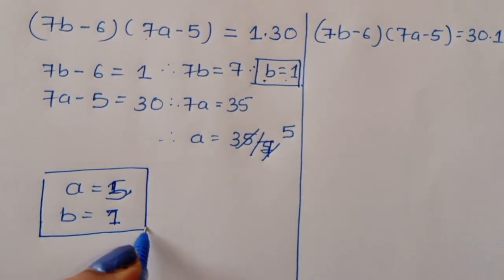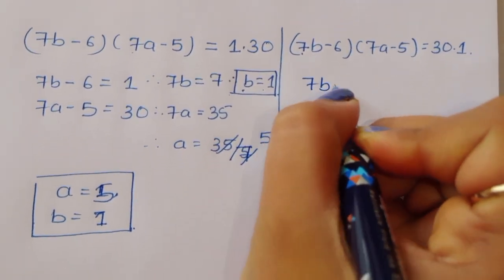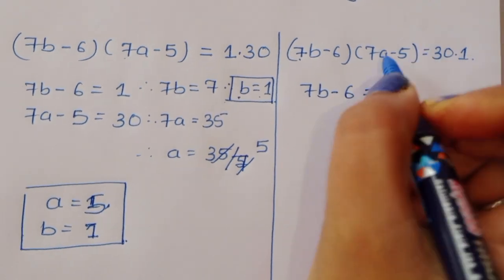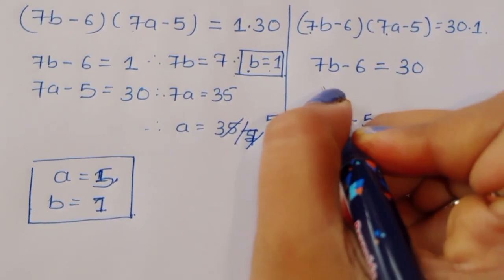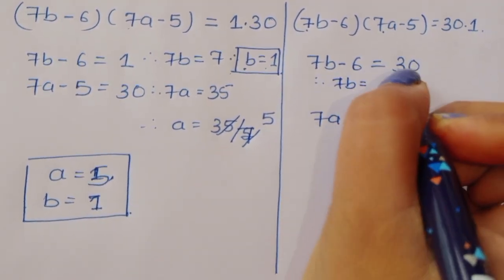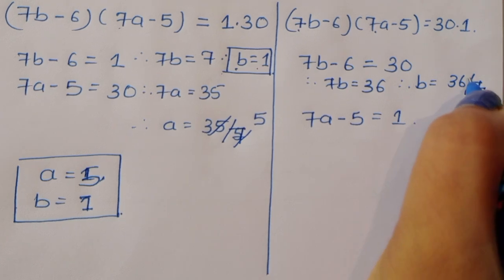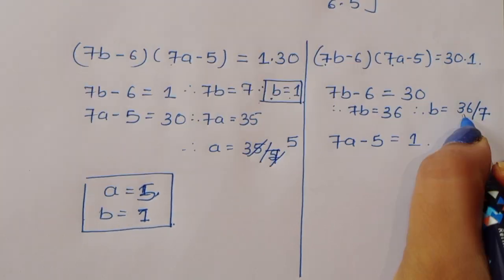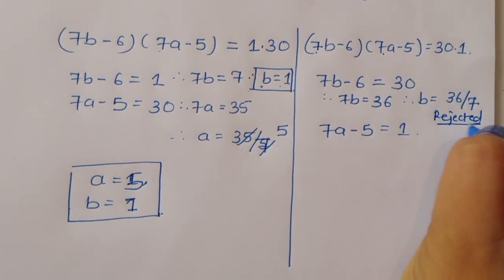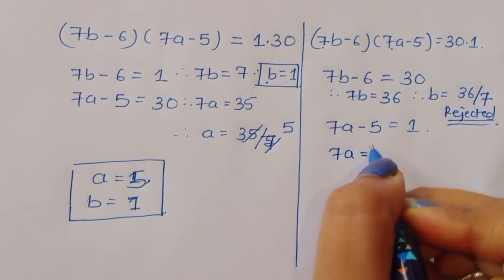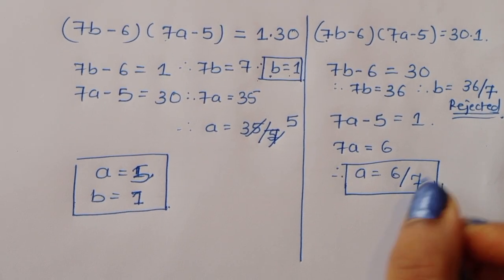In Case 1, second sub-case: 30×1, so 7B minus 6 = 30 and 7A minus 5 = 1. Then 7B = 36, so B = 36/7 — not an integer, rejected. And 7A = 6, so A = 6/7 — also not an integer, so this is also rejected.